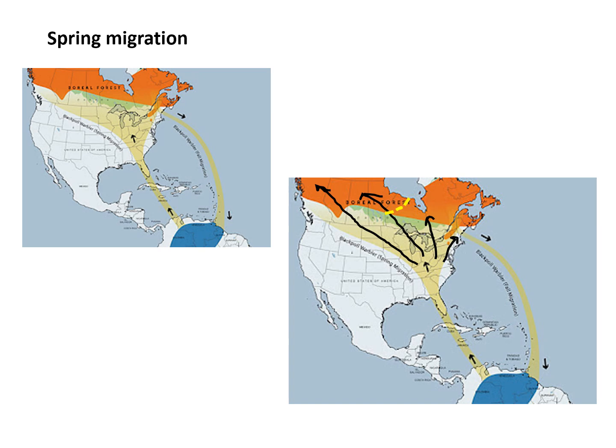If that were the case, you might expect birds going to the eastern part of the breeding range — east of Ontario — to be the ones caught at migration stations in the northeastern U.S. and in Ontario, and birds going to the west might only be captured at western stations.